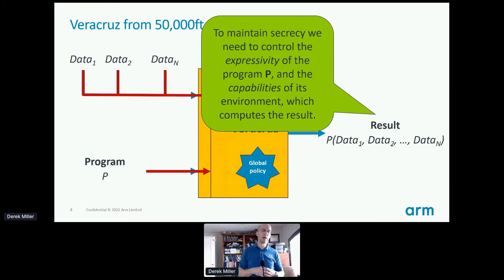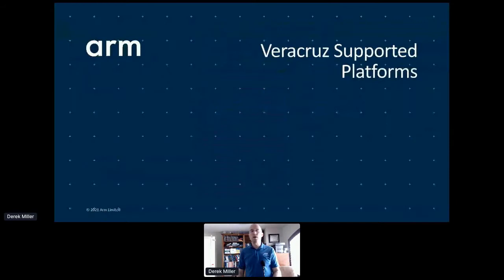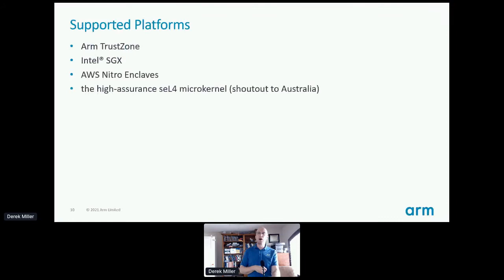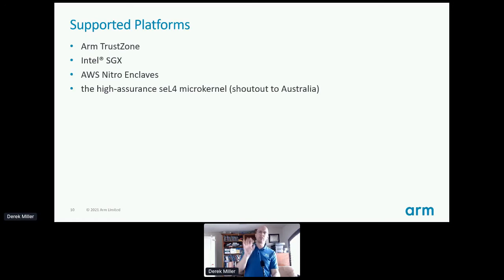A bit on the platforms we support: we've got ARM TrustZone, Intel SGX, and AWS Nitro Enclaves. Also, in an experimental branch, we've got support for the high-assurance seL4 microkernel, which was developed mostly in Australia. The seL4 microkernel is formally verified — it's not the same as the other hardware enclaves and doesn't provide the same protections, but it is an interesting support model. I can talk about the details offline if you're interested.